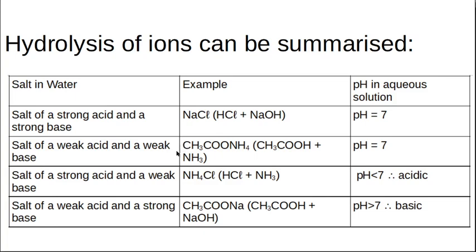If you mix a strong acid like hydrochloric acid and a weak base like ammonia, you get ammonium chloride, which is an acidic salt — pH less than 7. If you mix a weak acid like vinegar with a strong base like sodium hydroxide, you get sodium ethanoate, which is a basic salt with a high pH — because it came from a strong base.